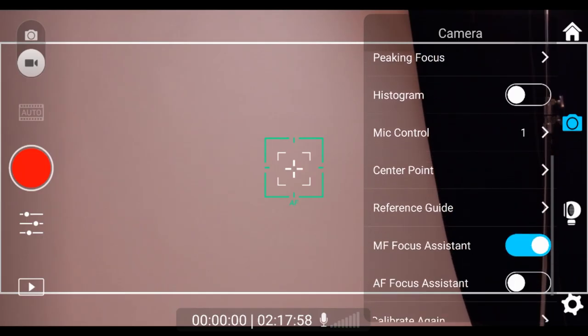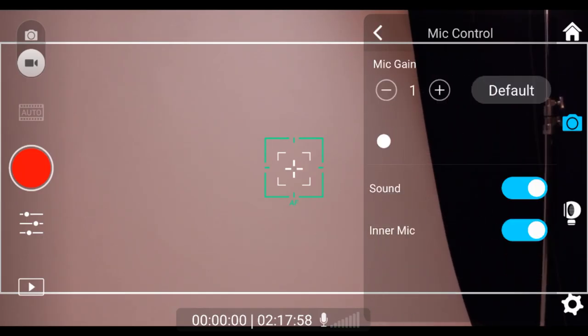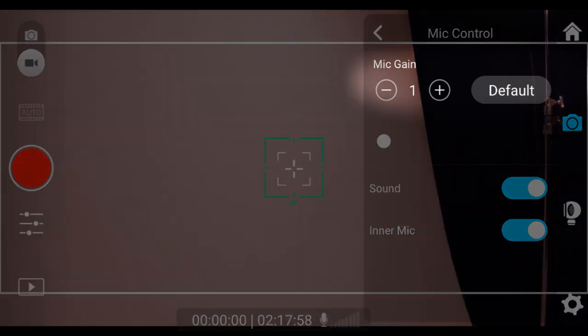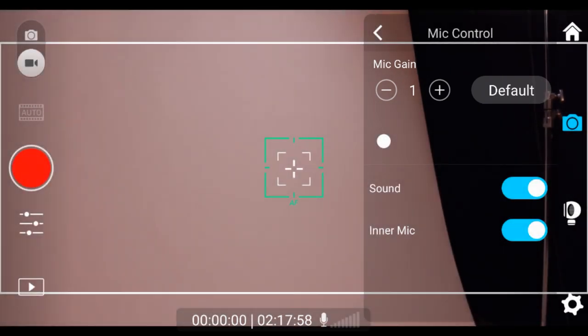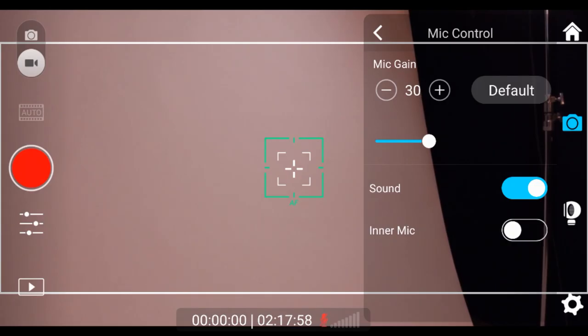To adjust audio, open up the mic control settings. At the top of the menu, you will have your mic gain settings. You can adjust the gain, either by the plus and minus signs on either side, or with the slider bar at the bottom. You can quickly reset the gain to 30 by hitting the default button. At the bottom, you will see two switches. The first is labeled sound. This is where you can turn on or off sound recording. If sound is turned on, you will see a switch for inner mic. This will control if the internal mic is on or off. If you will be using an external audio source, I recommend turning the inner mic off.